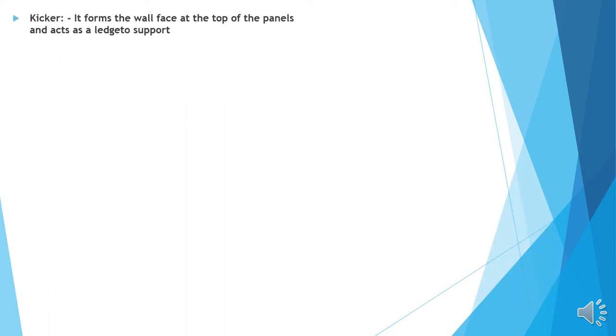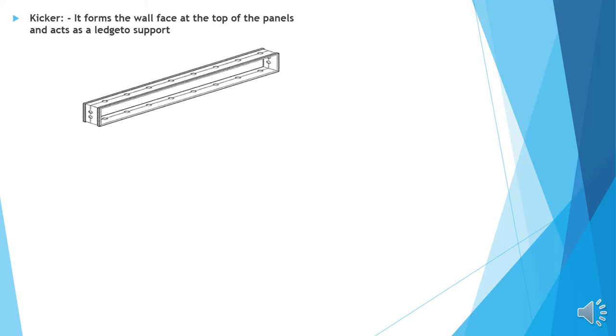Kicker: It forms the wall face at the top of the panels and acts as a linch to support. This is the kicker. It can be used as a level adjuster also. It will be on the top of the wall.